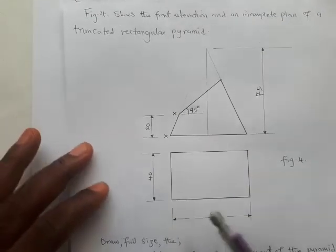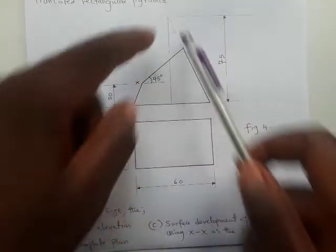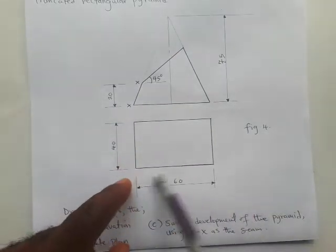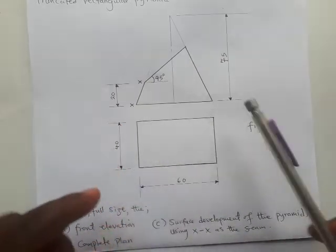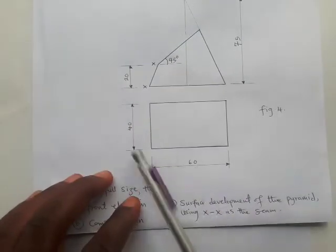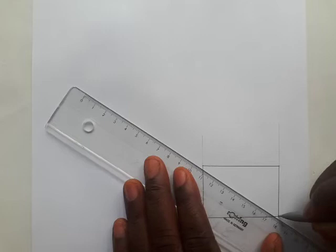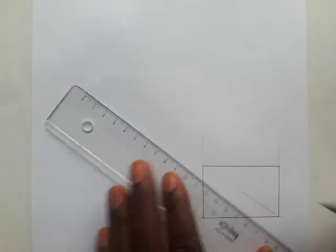You can start with the elevation because the 60 dimensions are corresponding when viewing from the surface. But we start with a plan to project into the elevation. Draw a rectangle of 60 by 40 - that represents the rectangular base. Since it's a pyramid, draw the diagonals with thin lines because it is truncated.